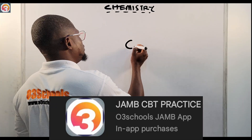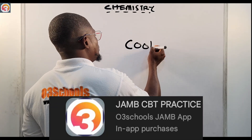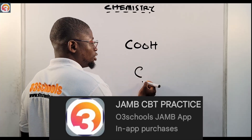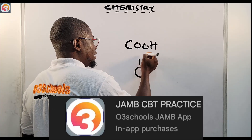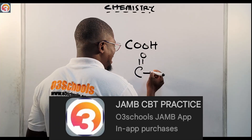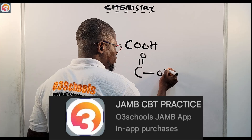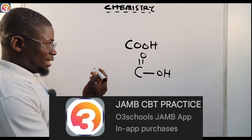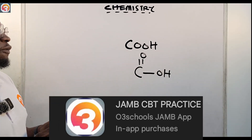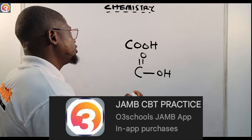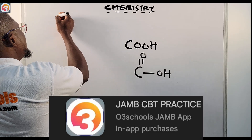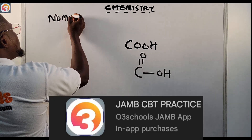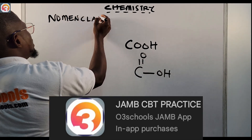Alkanoic acids, or carboxylic acids, are the ones we say have the functional group COOH — that is a carbon atom double bonded to an oxygen atom, and then that same carbon bonded to an OH group. This is the functional group for the alkanoic acid.